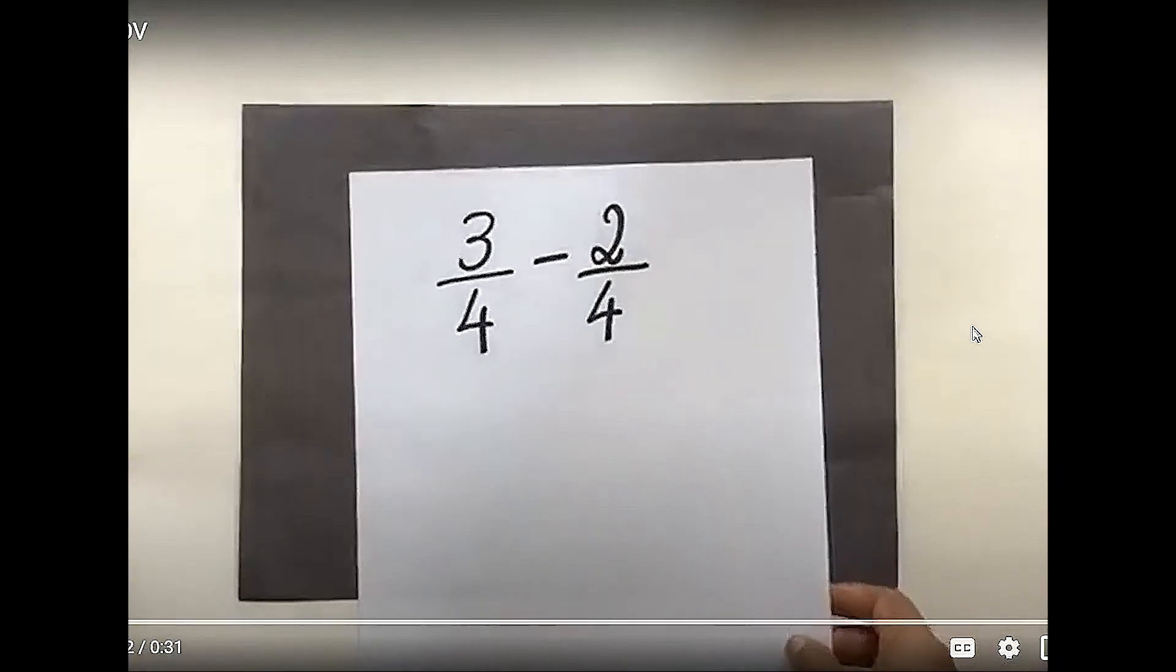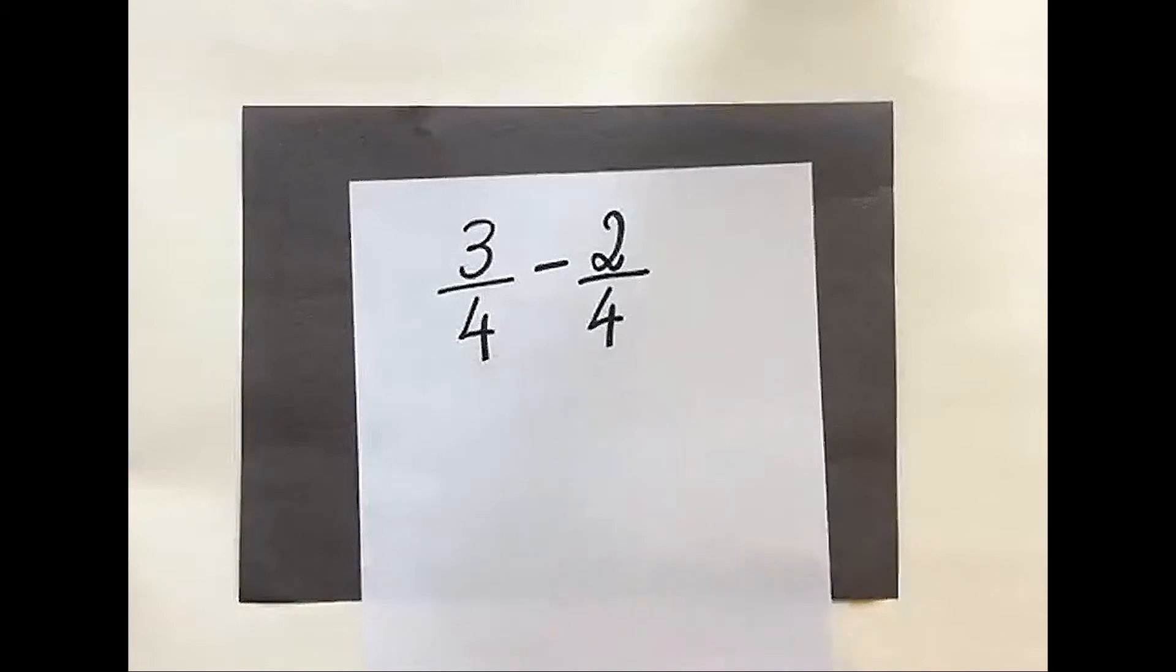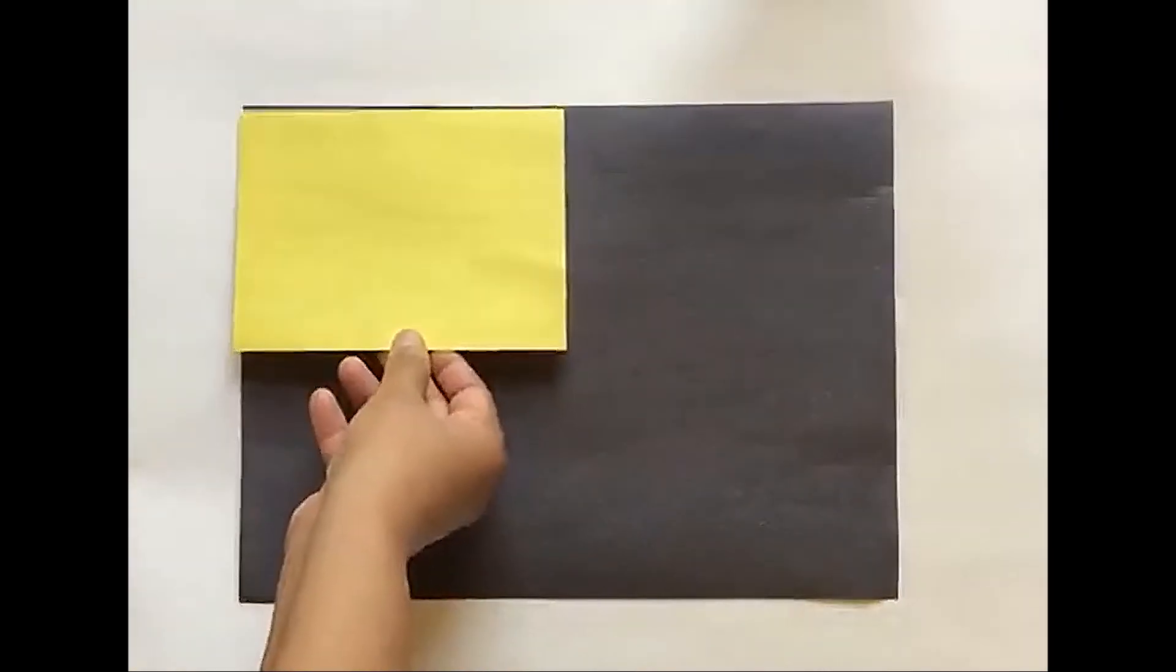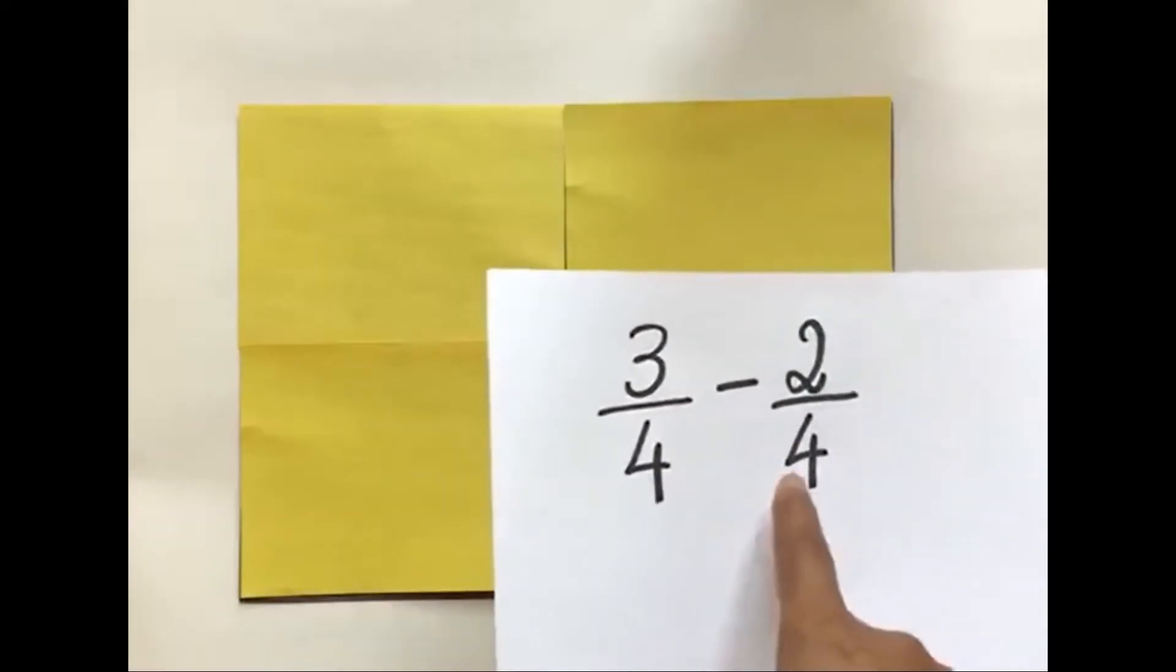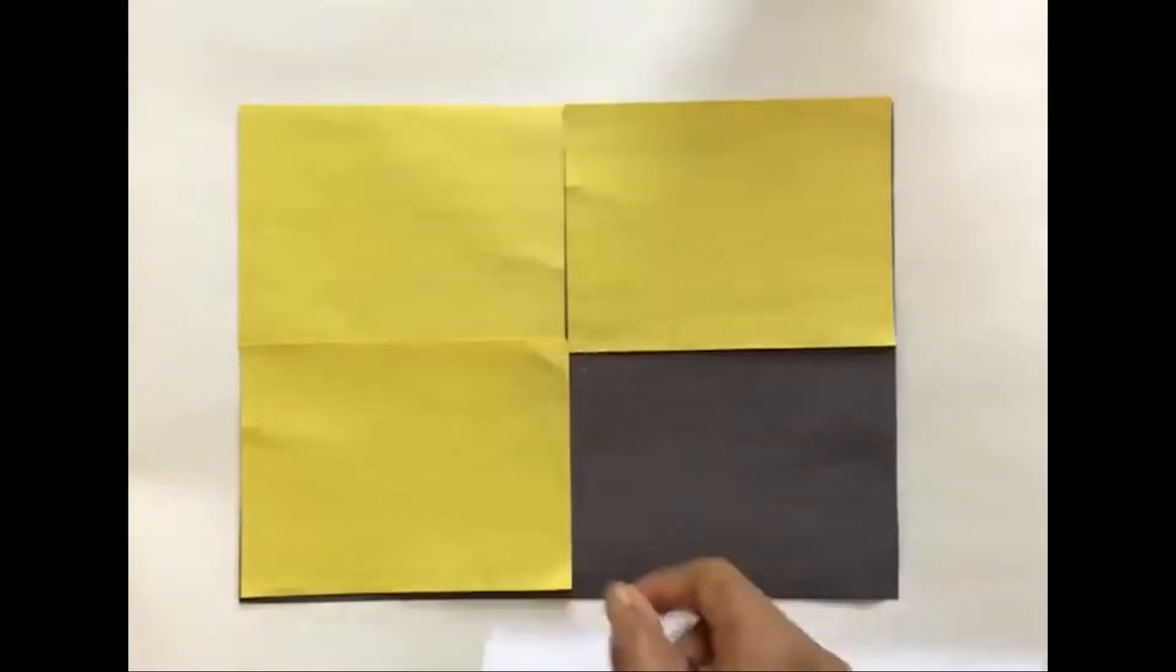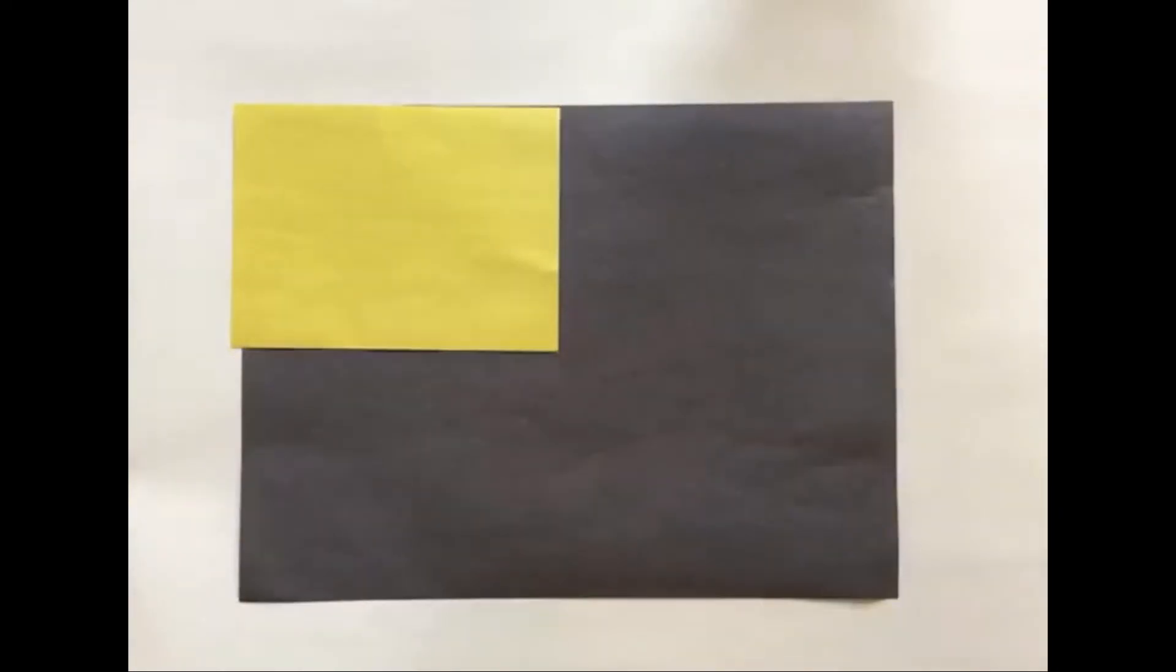Let's subtract fractions with like denominators: 3/4 minus 2/4. Begin with 3/4 using yellow construction paper to represent 3/4. Now from 3/4, we need to remove 2/4. It's visually so much easier to see that I could remove 1/4 and 2/4. So I am left with 1/4 for my answer.